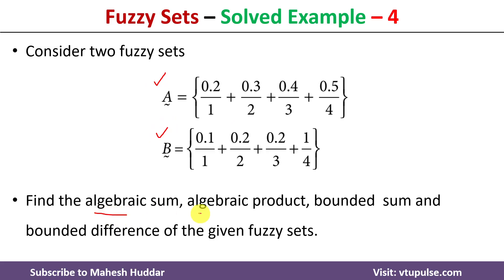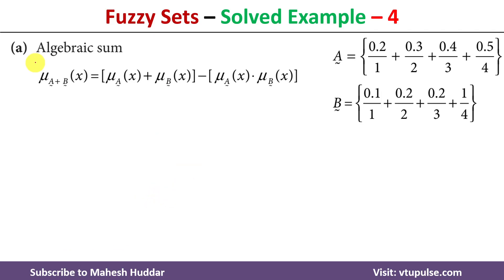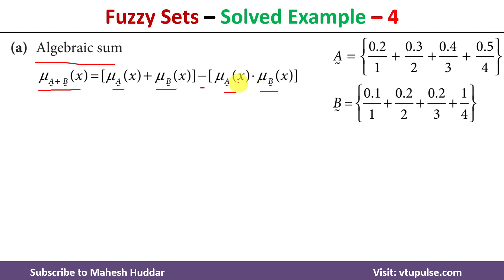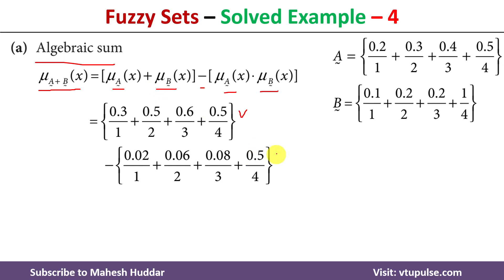We need to find the algebraic sum, algebraic product, bounded sum and bounded difference. Starting with the first one — the algebraic sum, denoted by this symbol. The membership value of x in the algebraic sum is always equal to the sum of membership values of x in both fuzzy sets, minus the product of the membership values of x in both fuzzy sets. So we add the membership values and then subtract their multiplication.